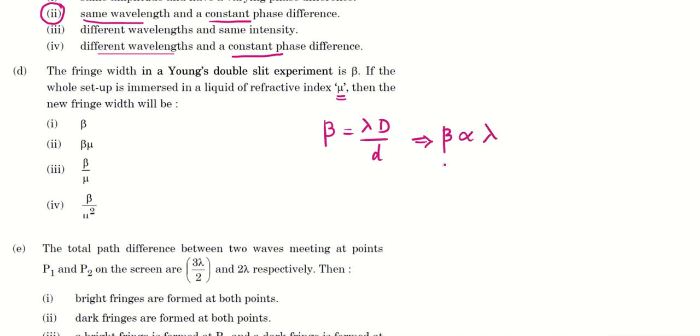But at the same time we know lambda is directly proportional to velocity of the light and inversely proportional to refractive index of the medium. So if the refractive index of the medium increases, definitely this beta is going to decrease.